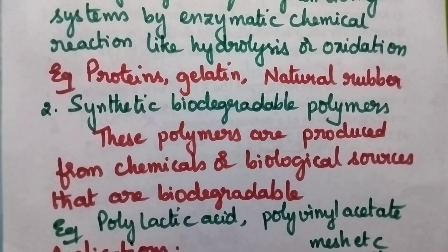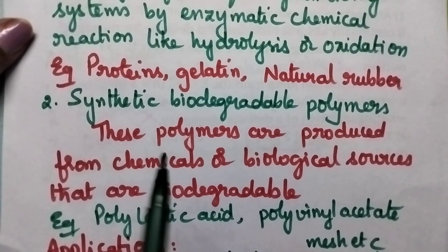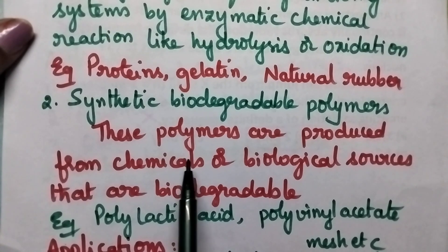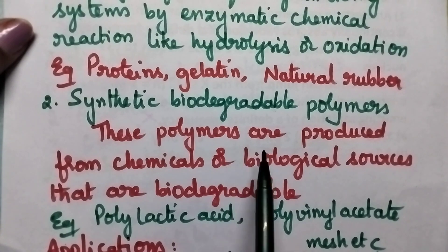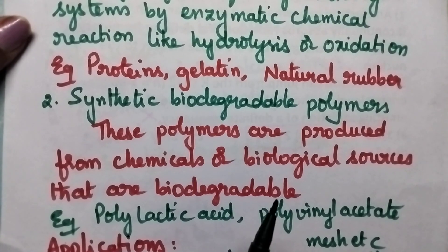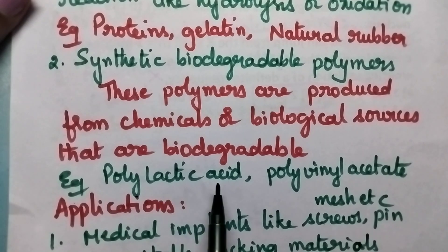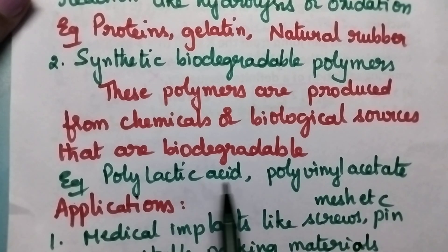Coming to the synthetic biodegradable polymers, they are polymers which are obtained from chemicals or from a biological source which are biodegradable. Examples of synthetic biodegradable polymers include polylactic acid and polyvinyl acetate.